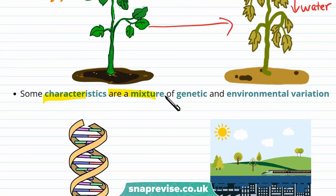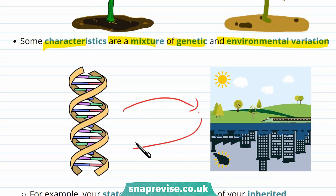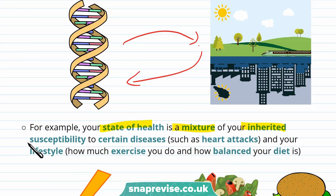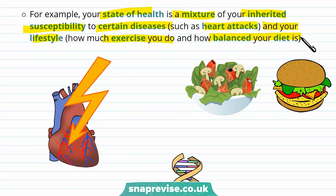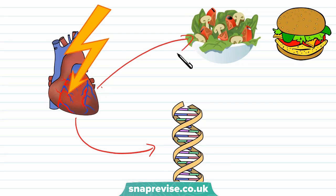Some characteristics are a mixture of genetic and environmental variation. For example, your state of health is a mixture of your inherited susceptibility to certain diseases, such as heart attacks, as well as your lifestyle — how much exercise you do and how balanced your diet is. You may be at increased risk of heart attacks due to your family history, but at decreased risk because of your lifestyle, for example if you eat a balanced diet.